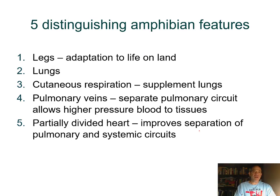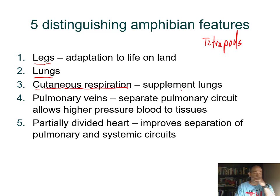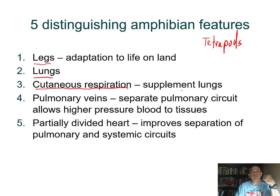There are five distinguishing features for amphibians. First, they now have limbs or legs—we call this group tetrapods, meaning four legs. They have lungs, which is important when moving onto land to exchange atmospheric gas. Amphibians also have many blood vessels in their skin, enabling cutaneous respiration, which supplements their still somewhat primitive lungs.